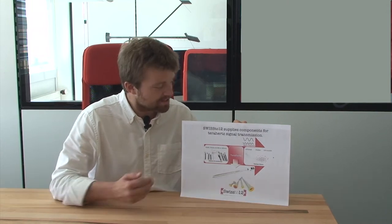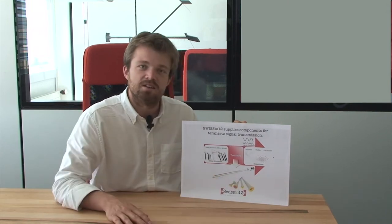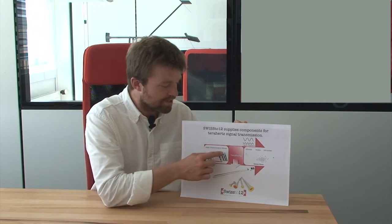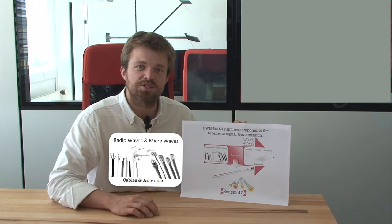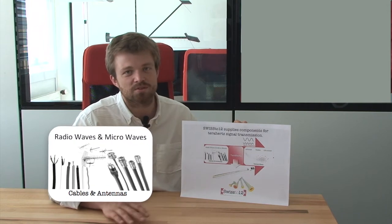Each and every signal has its associated frequency. Low-frequency signals, such as radio waves or microwaves, and more generally in the domain of electronics, can be channeled by using common copper cables or antennas.